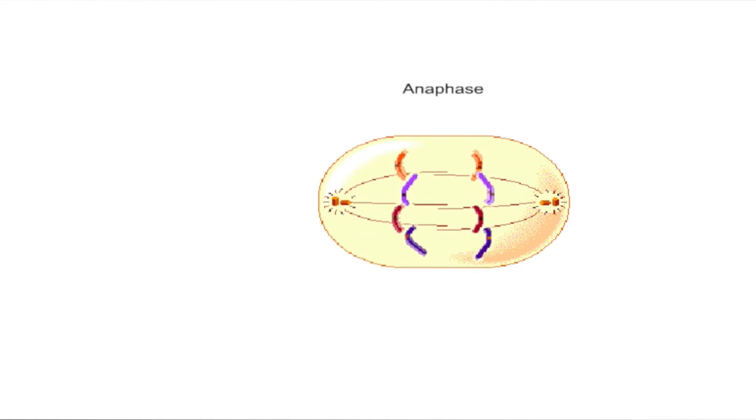At the same time, the polar microtubules lengthen and the cell membrane begins to elongate, causing it to become elliptical in shape. Depending where the centromere is located along the chromosome, a characteristic shape such as a V or a J appears during chromosome movement. At the end of anaphase, a complete set of chromosomes has assembled at each pole of the cell.